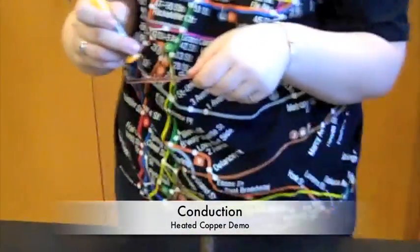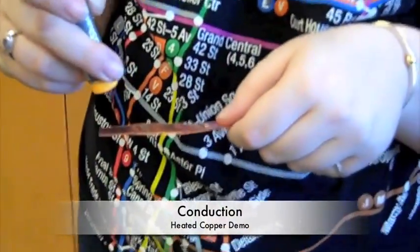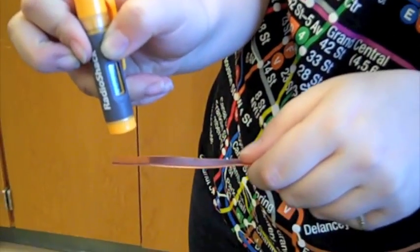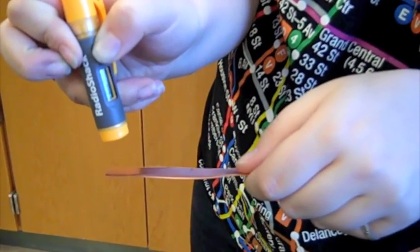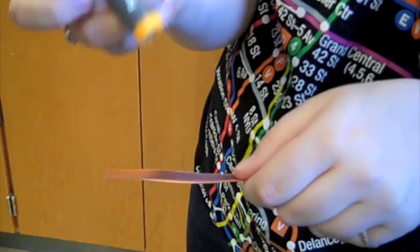In this demo, a piece of copper is being heated. Shown is an infrared thermometer which uses infrared waves to take the temperature of solids. At room temperature, the temperature of copper is 19 degrees Celsius.